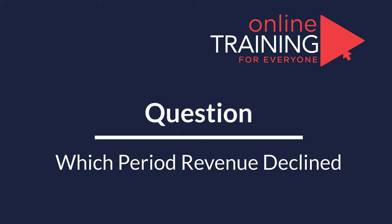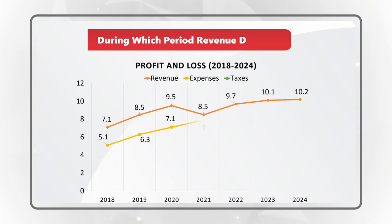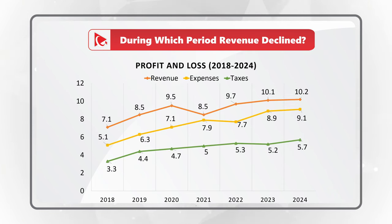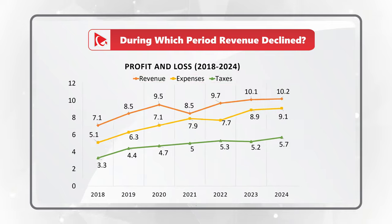Here is a rather unexpected question you might frequently see on the test. You need to determine during which period revenue declined. You are presented with a profit and loss chart covering periods from 2018 to 2024. On the chart you see three lines representing revenue, expenses, and taxes. You need to select the final answer out of four different choices.